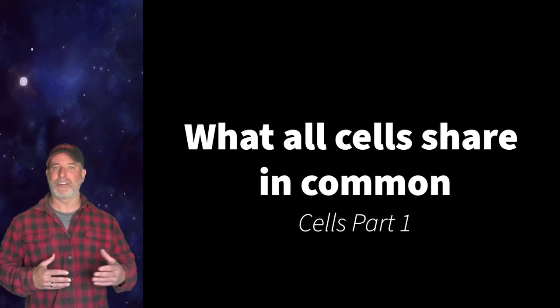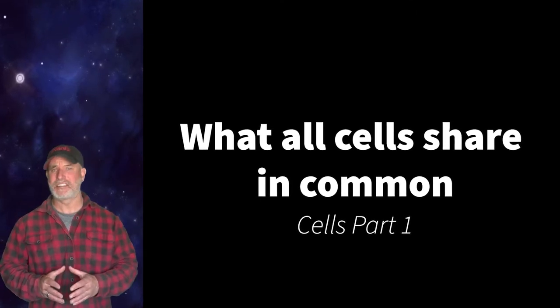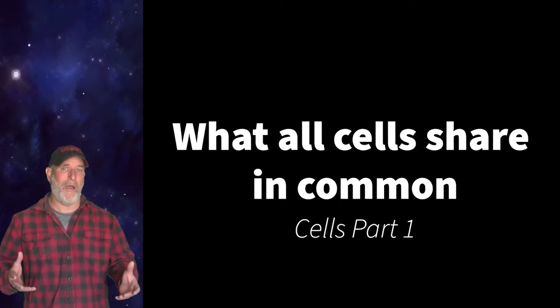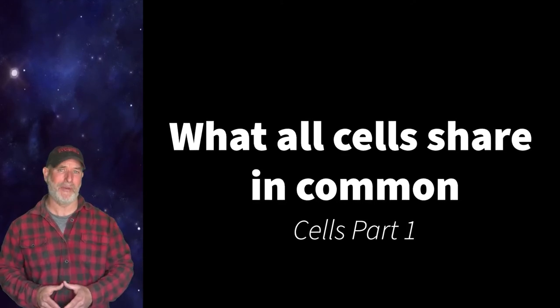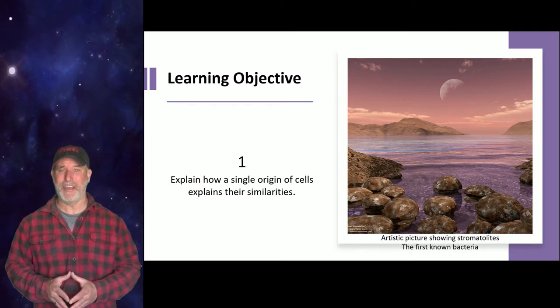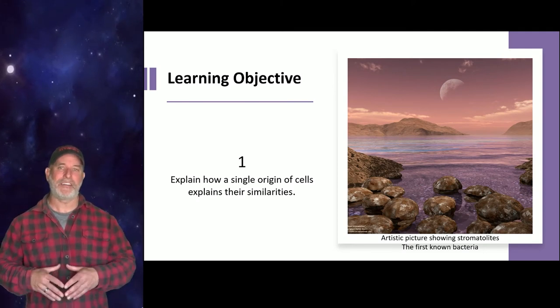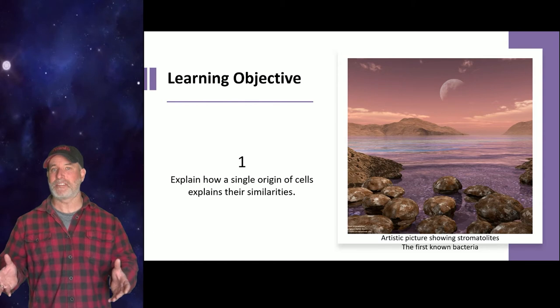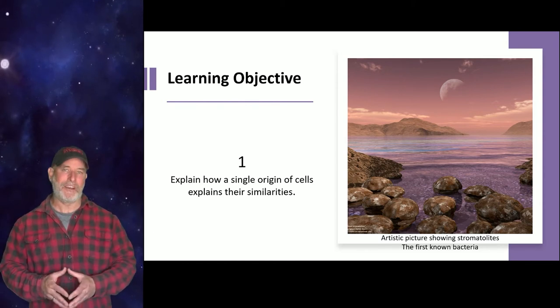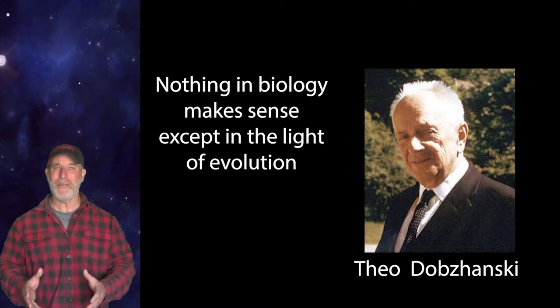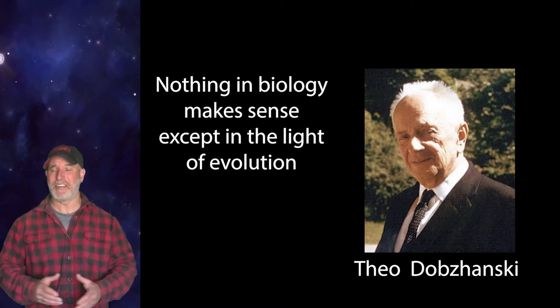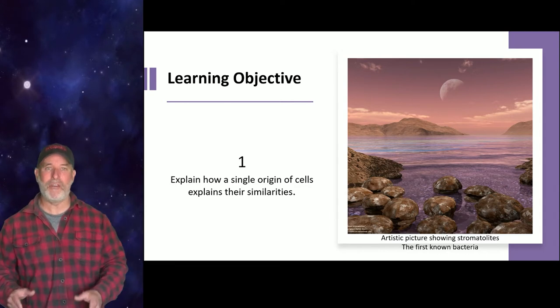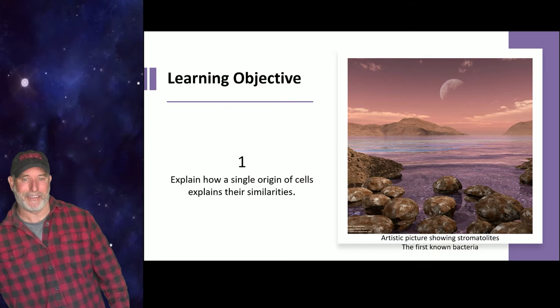Rather than starting by contrasting the differences between prokaryotes and eukaryotes, which is often what we focus on, let's see how they're similar. What do you have in common with a bacterial cell? It turns out quite a bit, and the reason for that is because we share common ancestry. We have a single origin of life or a single origin of cells, and this explains their similarities. Nothing in biology makes sense except in the light of evolution. As life evolves, we have maintained characteristics going all the way back to the first living organisms on this planet.